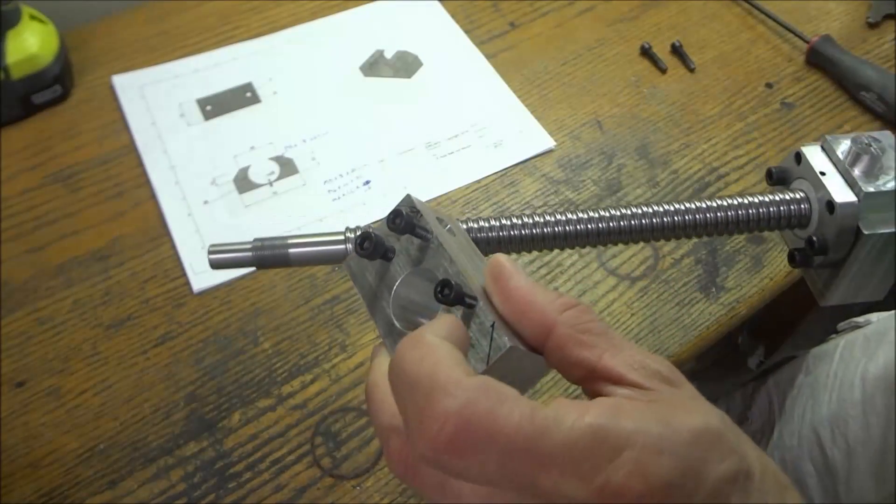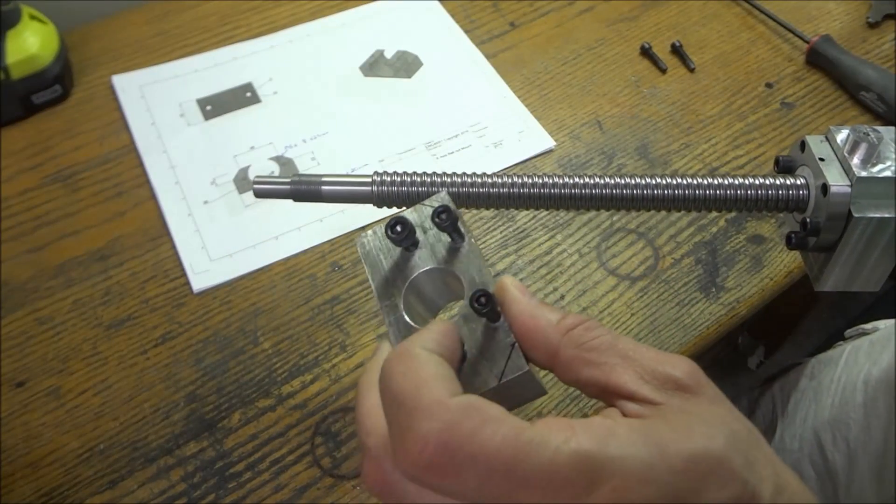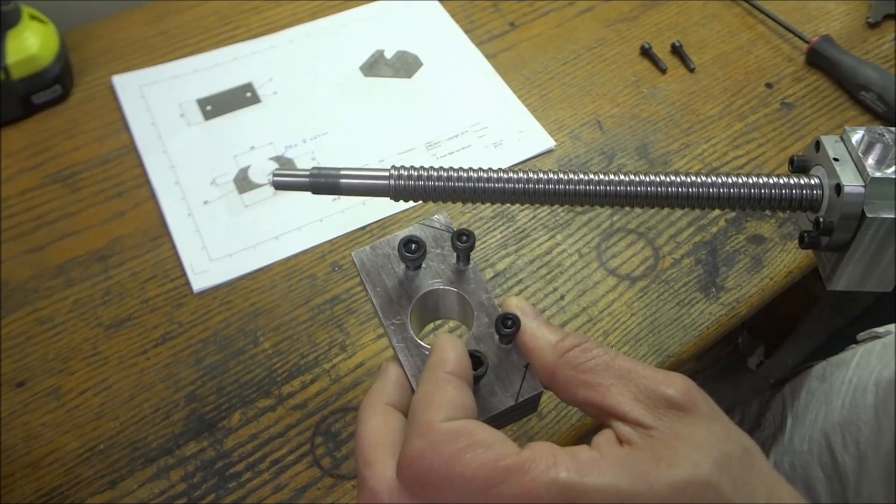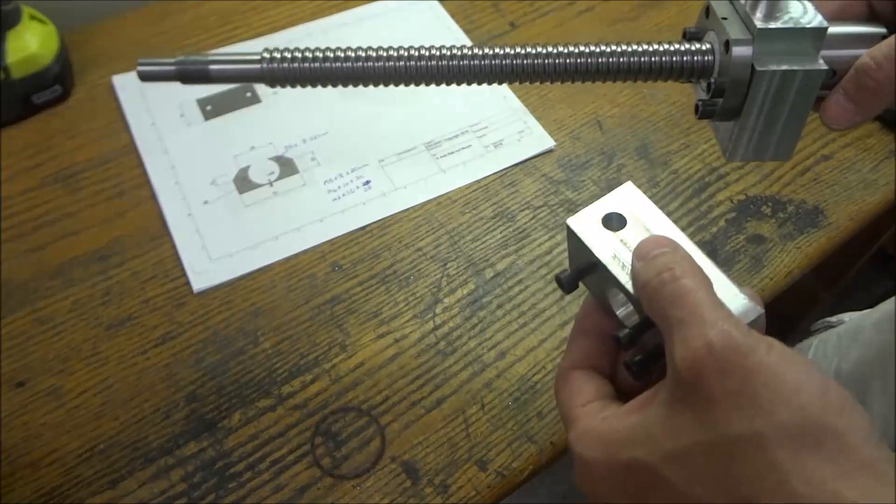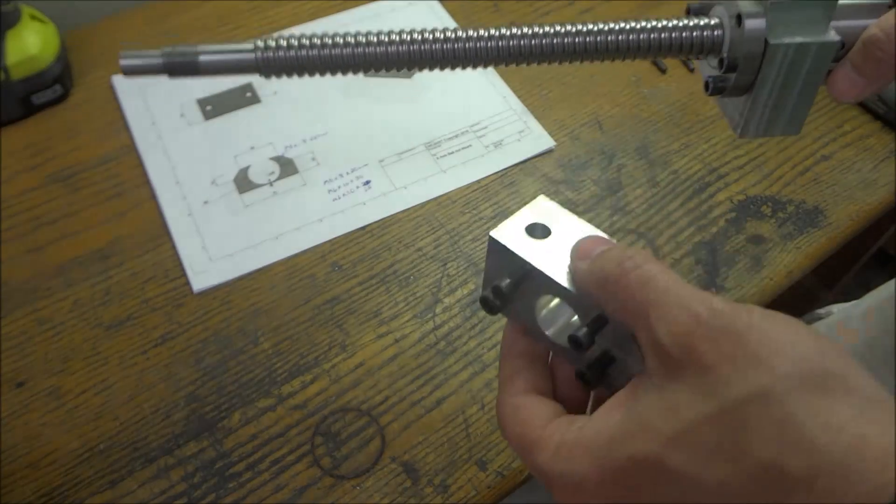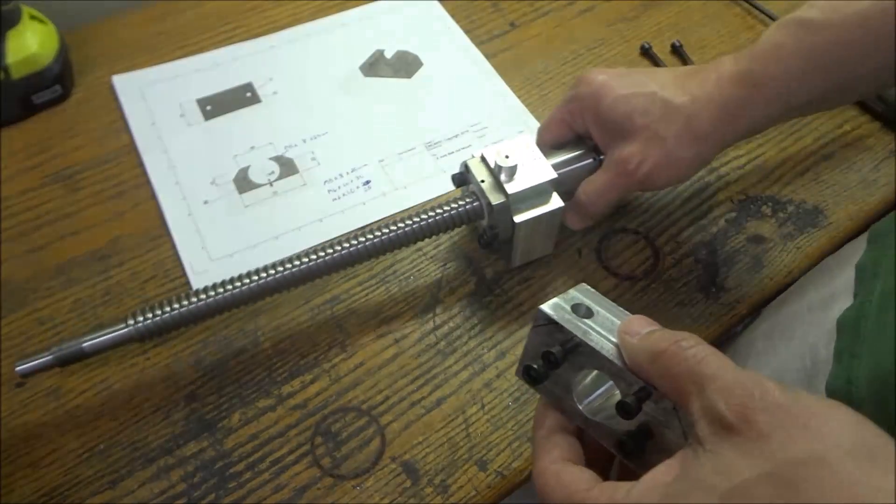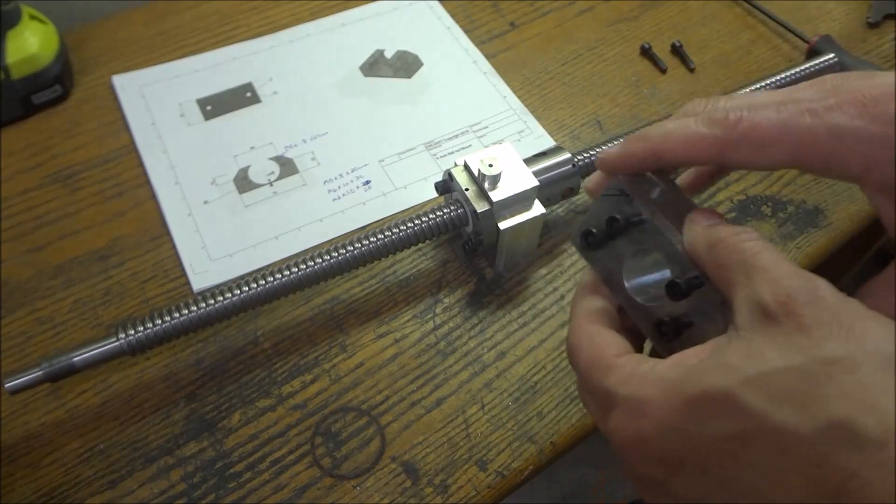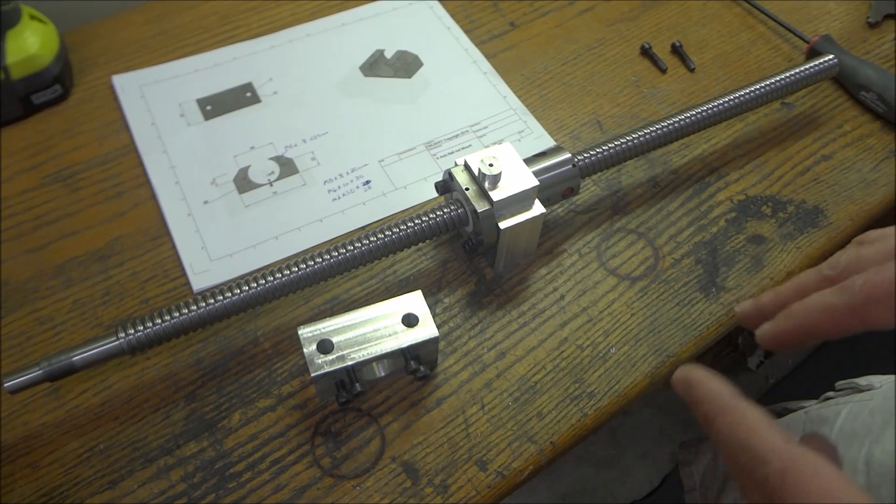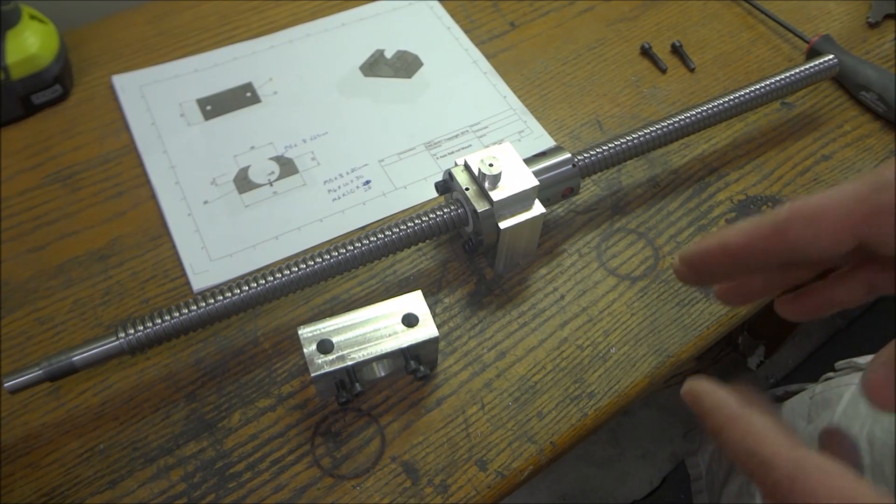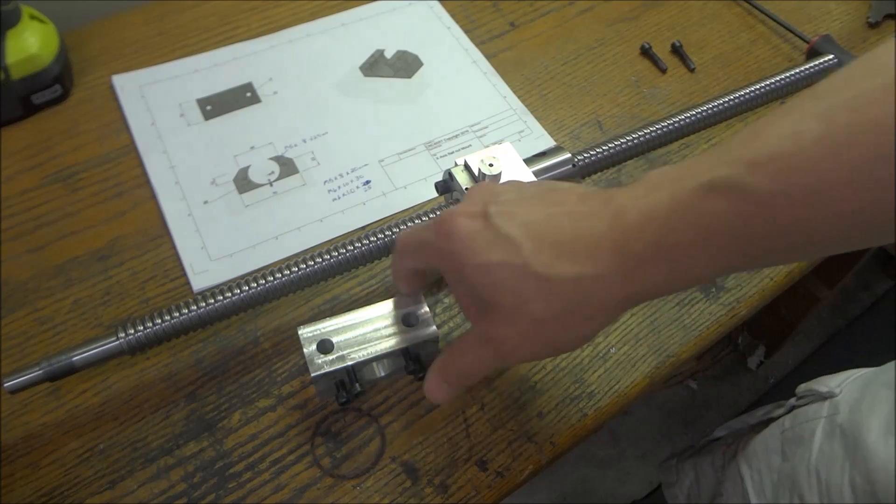But I added these extra two holes. Even though they're M5s instead of M6s, it'll still give it some stability. I bolted it up and it's really pretty sturdy, so I think we're gonna be just fine. There's probably other ways I could do this, but without making any modifications to the Precision Matthews, this was the best route.